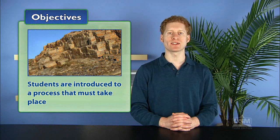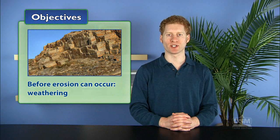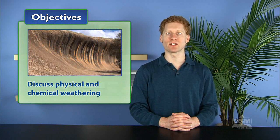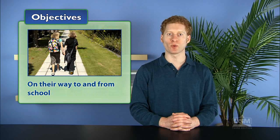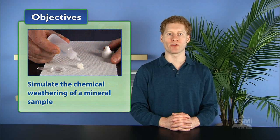In Activity 1, Weathering, students are introduced to a process that must take place before erosion can occur: weathering. Students first discuss physical and chemical weathering, and then observe and record signs of physical weathering on their way to and from school. Finally, they simulate the chemical weathering of a mineral sample.